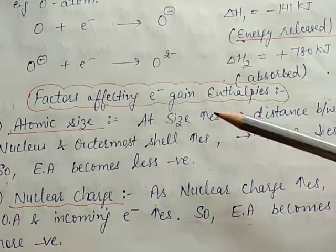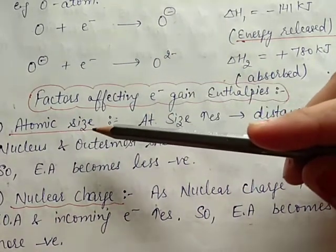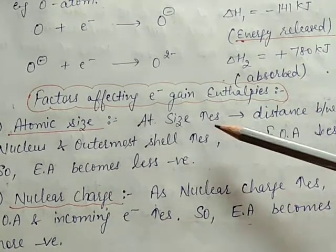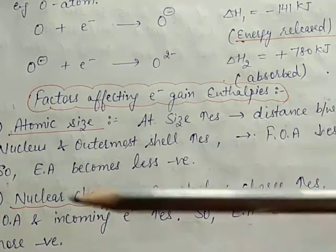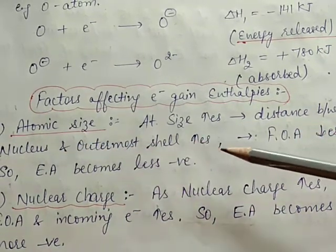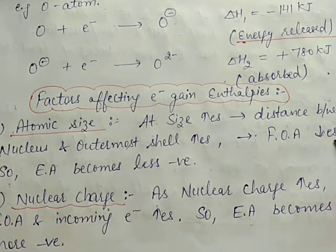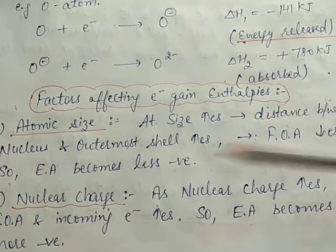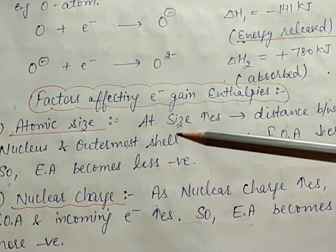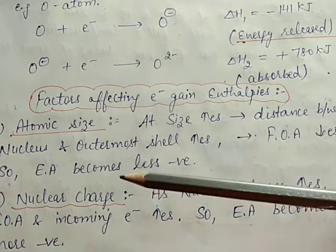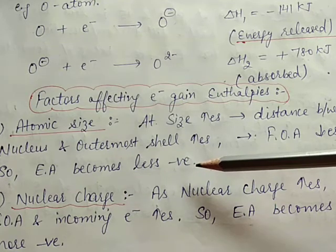Next are the factors affecting electron gain enthalpy. The first factor is atomic size. As atomic size increases, the distance between the nucleus and the outermost shell increases, so the force of attraction between them decreases, and electron affinity becomes less negative — meaning electron gain enthalpy decreases.